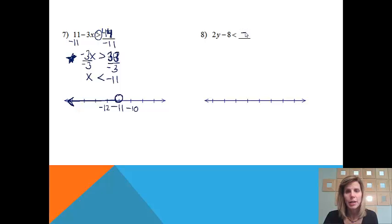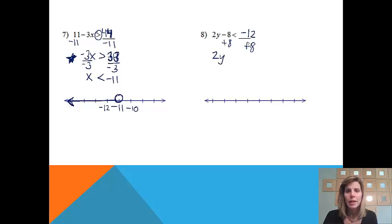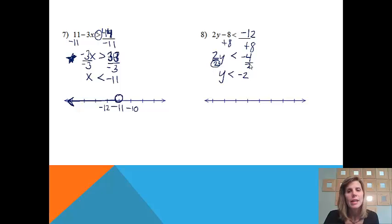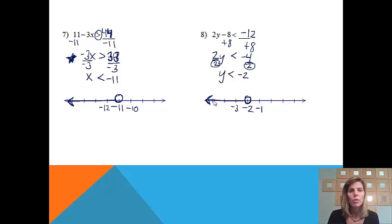Let's put in some numbers for practice: 2y minus 8 is less than negative 12. Please pause the video, try the problem on your own, then come back and check your answer. First, we add 8 to both sides: 2y, and negative 12 plus 8 is negative 4, keeping the less than sign. Then divide both sides by 2: y is less than negative 2. Notice we don't switch the inequality because we divided by a positive number, not a negative. We start the graph at negative 2 with an open circle, and shade all numbers to the left.